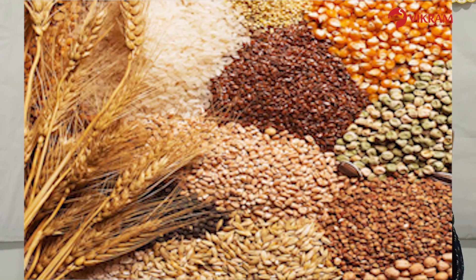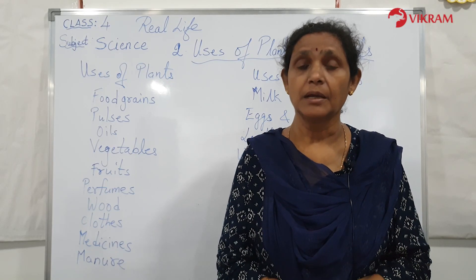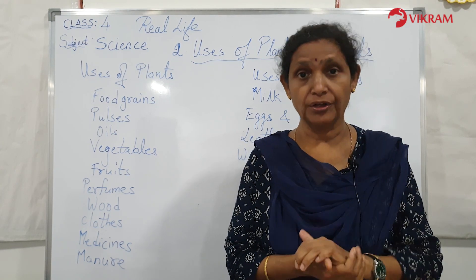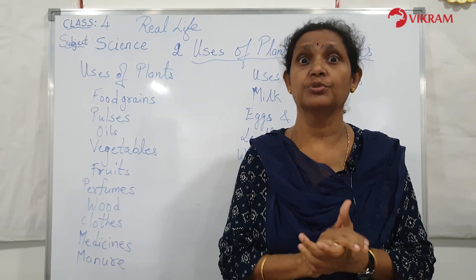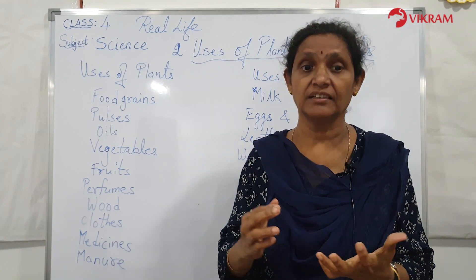The first use is food grains. The seeds of paddy, rice, wheat, maize, etc. are called cereals, also called food grains. Cereals are the most important food we get from plants; they are rich in carbohydrates. Children, whenever your mother prepares chapati or rice, please eat them — it is very good for your health.